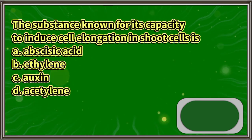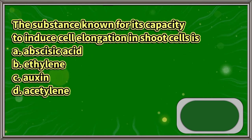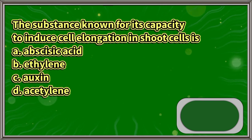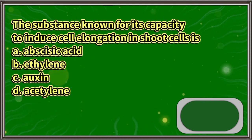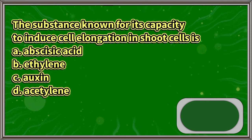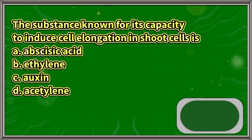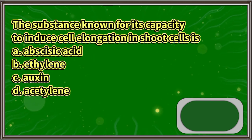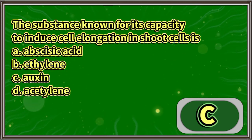The substance known for its capacity to induce cell elongation in shoot cells is: A. Abscisic acid. B. Ethylene. C. Auxin. D. Acetylene. The answer is letter C.